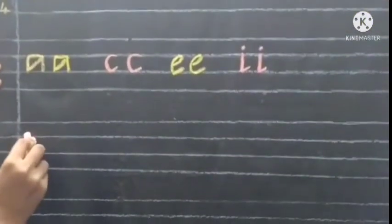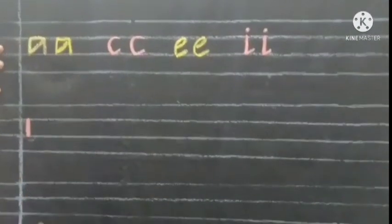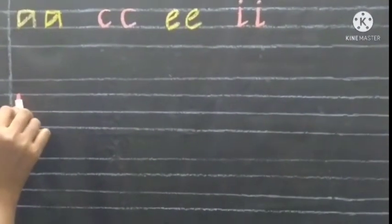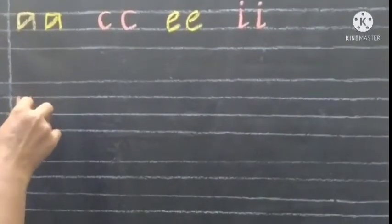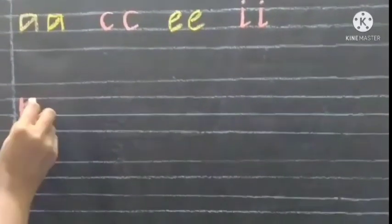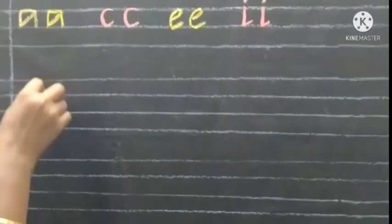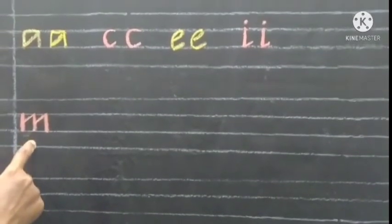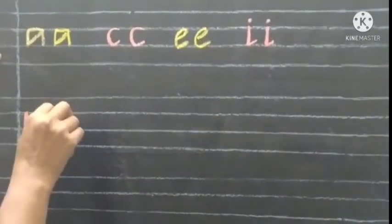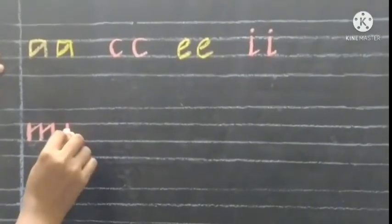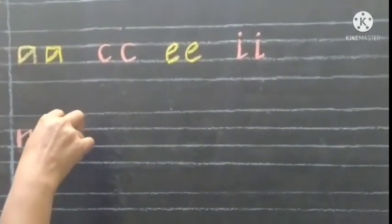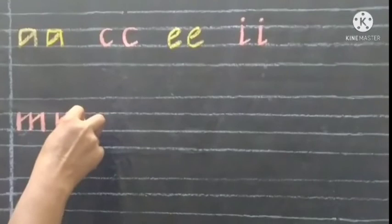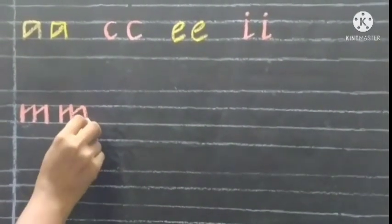Now we are going to write M. Touch these two lines and write: a straight line, a slanting line from the middle, then come down. After that, one more slanting line in the middle and come down — makes M. Write once again: a straight line, a slanting line from the middle, come down, one more slanting line in the middle, and come down. This makes M.